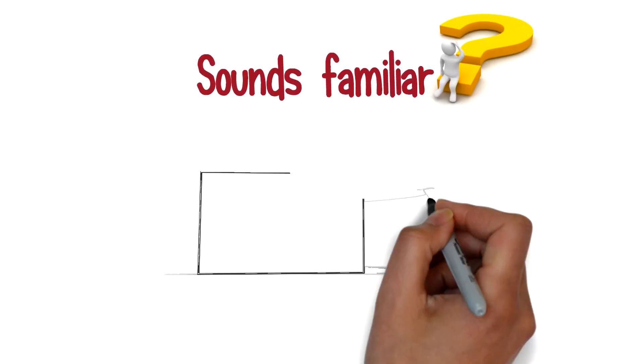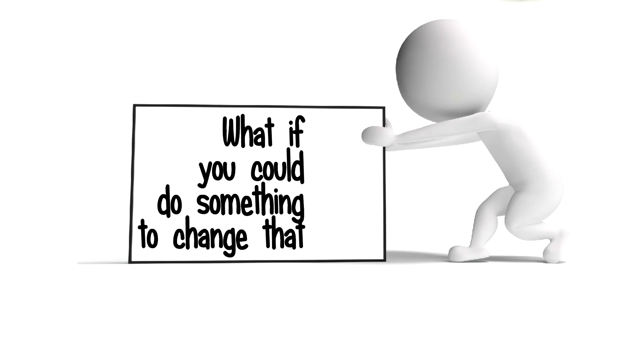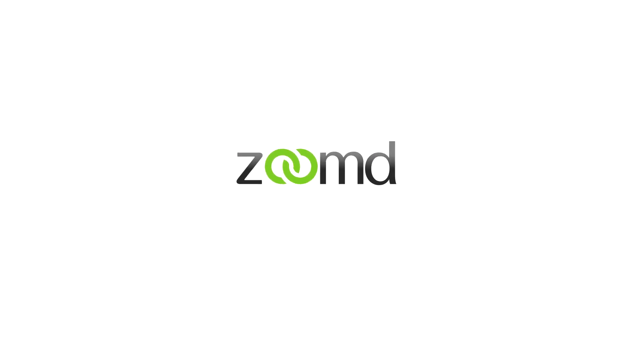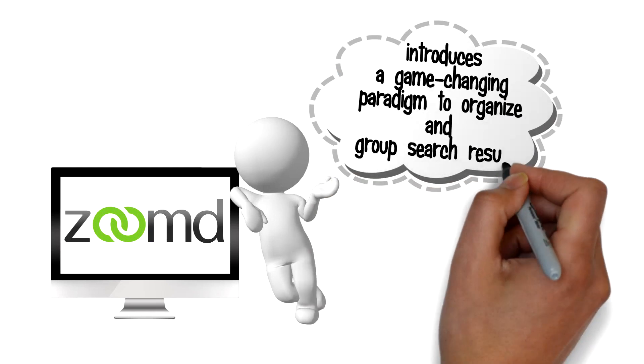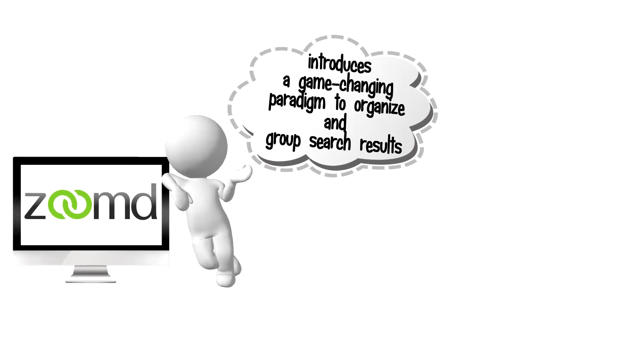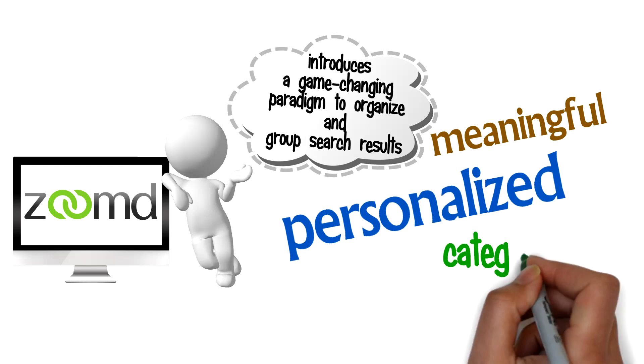Sound familiar? What if you could do something to change that? Zoomed, the new smart dynamic display for search results, introduces a game-changing paradigm to organize and group search results into meaningful, personalized categories.